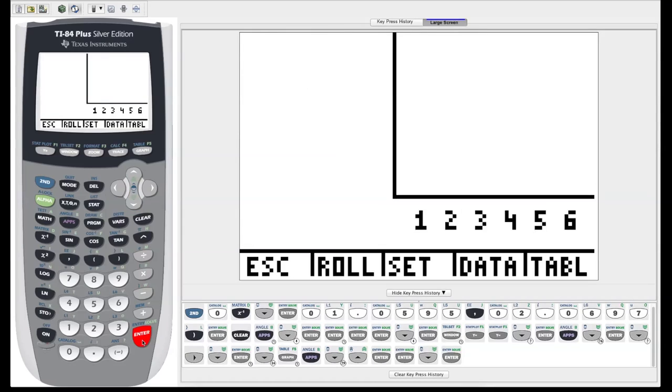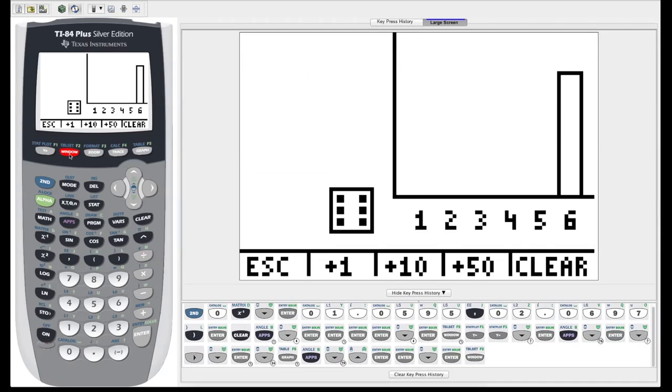So let's choose roll dice and see what it does. So then we have a few options. Escape, which is to leave, roll, set, data, table. So let's just hit roll, which is the window key. And look, it even shows a little animation of a dice rolling. It rolls a six and it records the data.